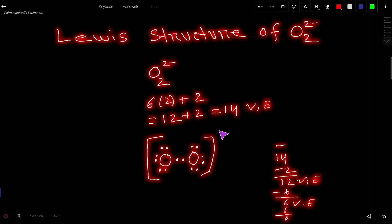And we have to place the charge. So this is the Lewis structure of O2^2-. You can express this bond pair as a dash. Thank you for viewing this video.